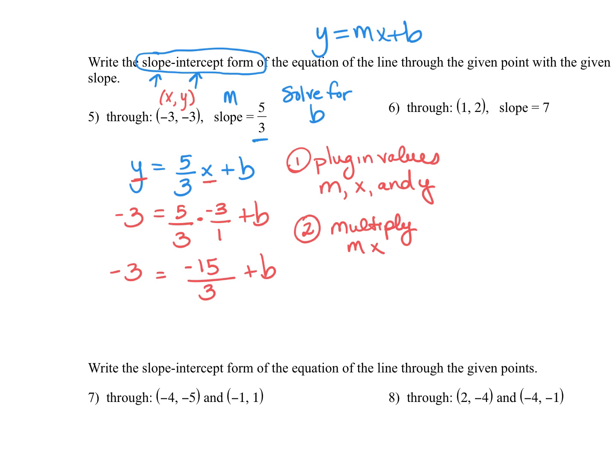So after we multiply, then the next thing we want to do is we want to simplify. And in this case, I can divide -15 by 3 and get an even number. -15 divided by 3 gives me -5. So my last step is to get b by itself. Depending on what value I have for when I multiply m and x, I either need to add or subtract that value to both sides of the equation to get b by itself.